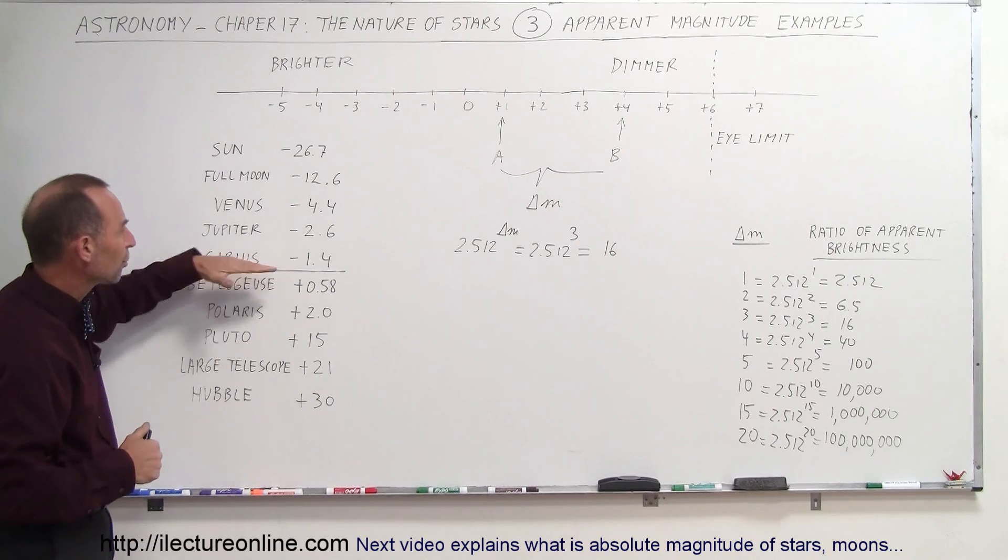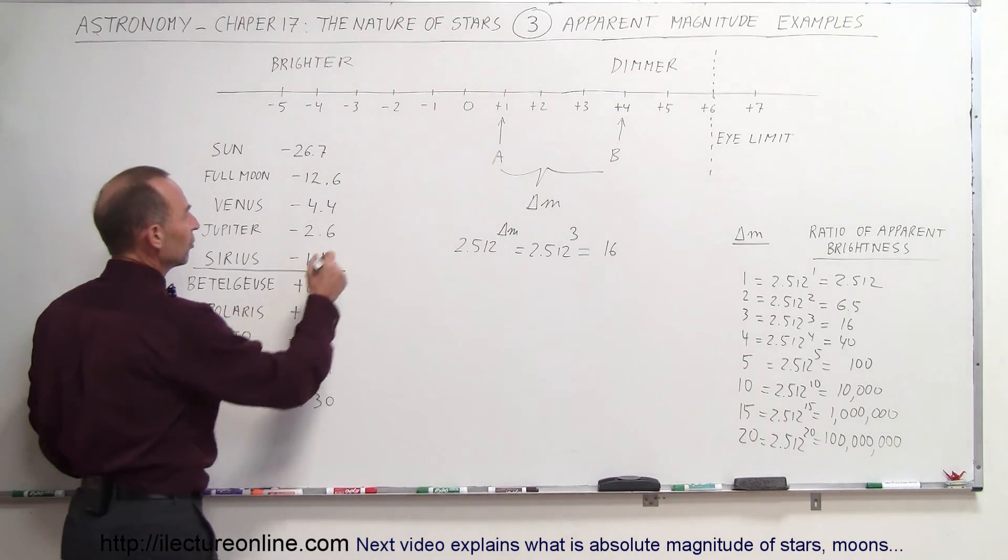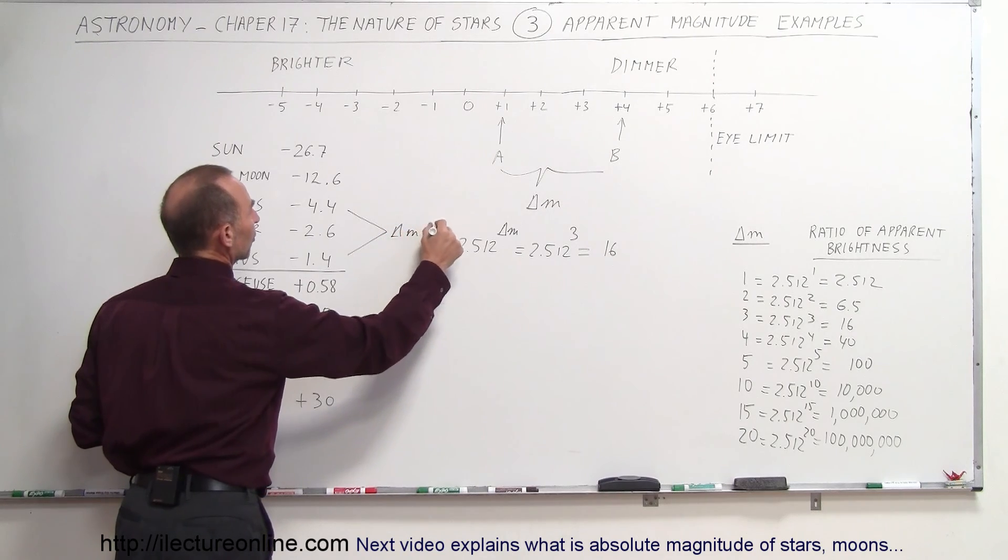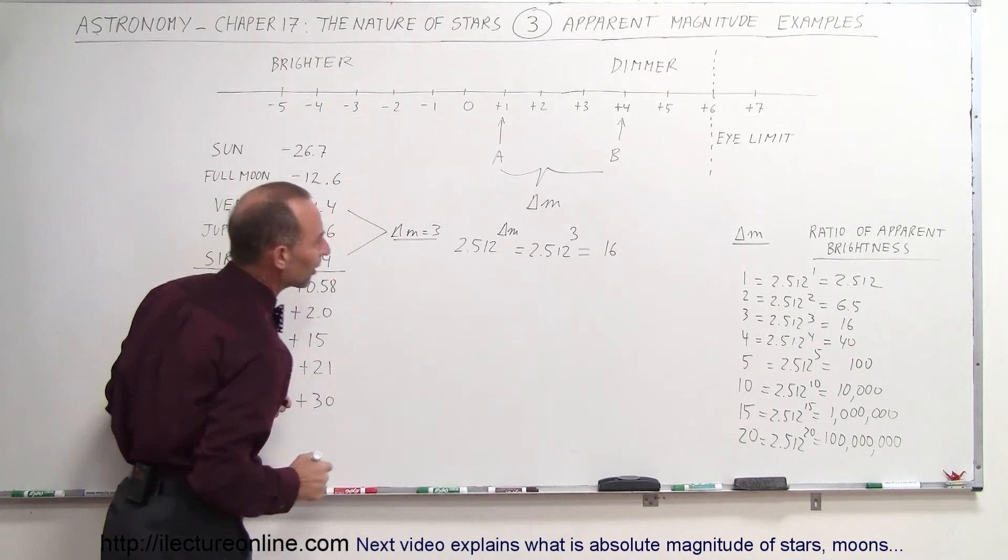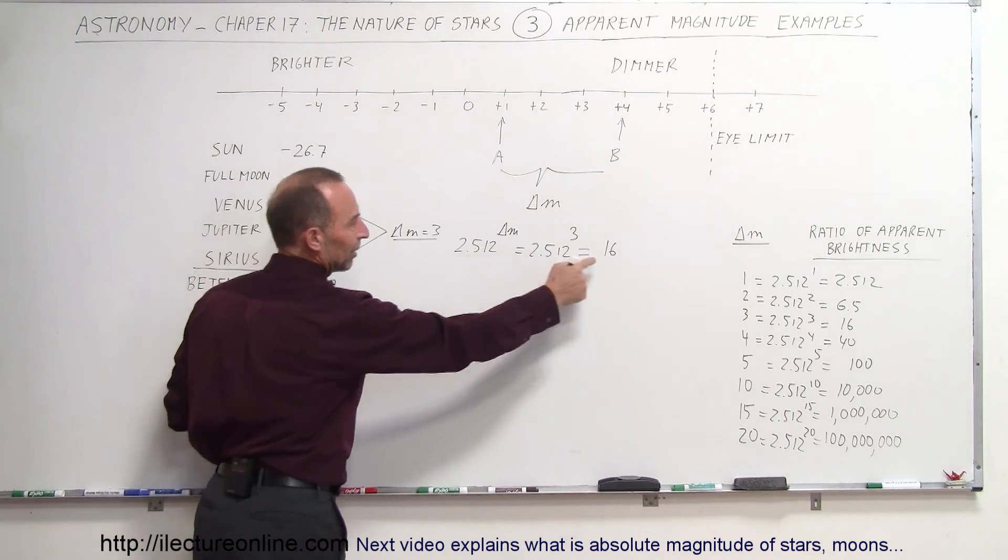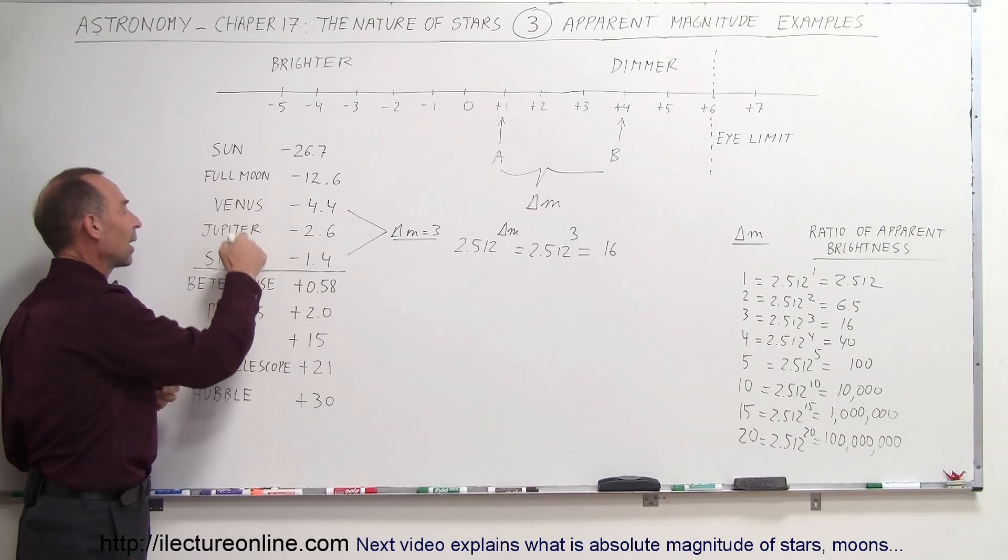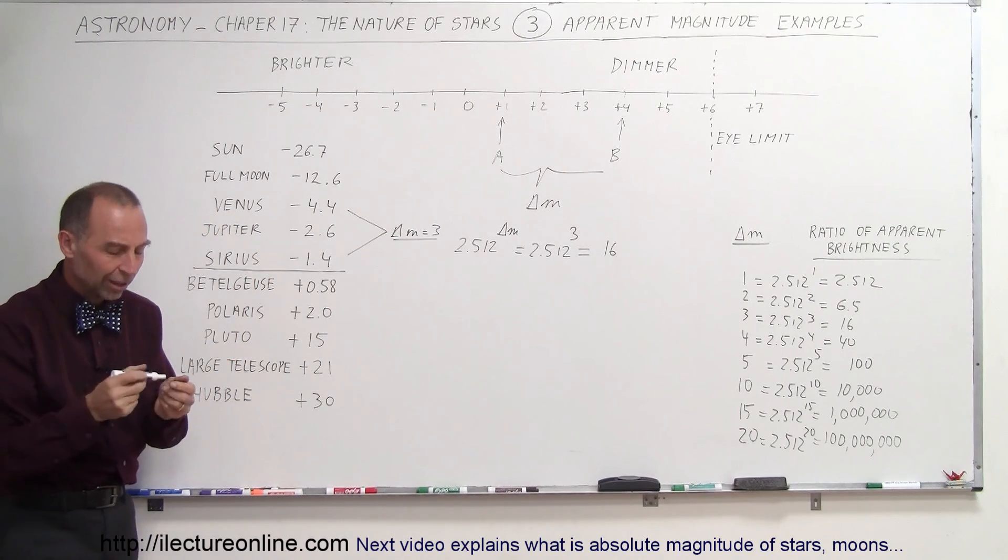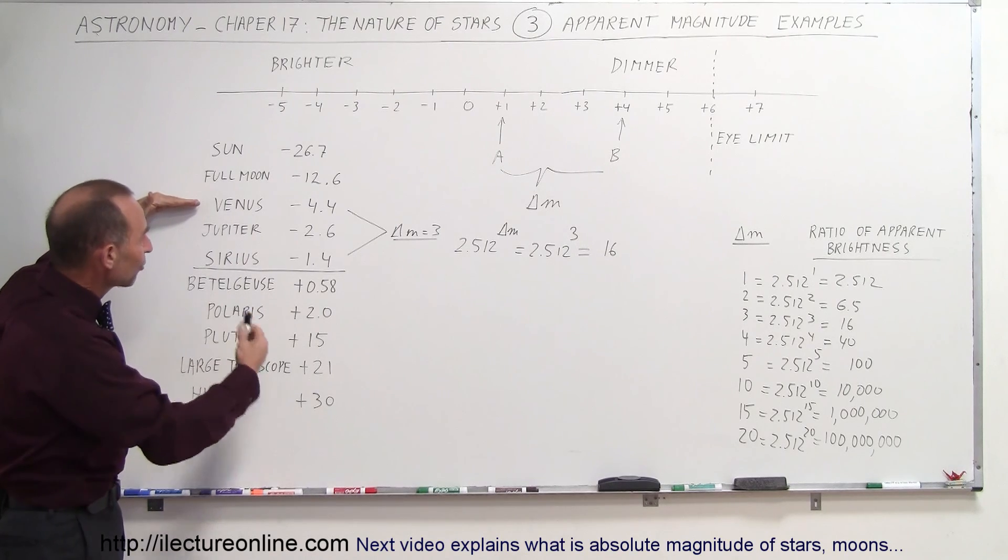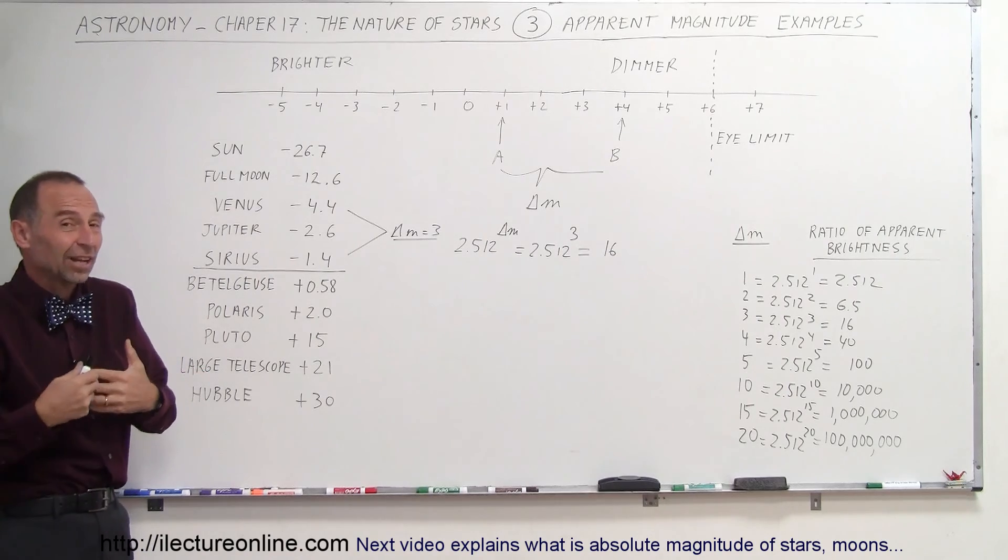How much brighter is Venus compared to Sirius? Notice the difference. If you compare the two, the delta m would be equal to three. That fits right into the example. 2.512 to the third power is 16. Therefore you could say that Venus is 16 times brighter than Sirius. We can see 16 times as much light coming from Venus as we can see from Sirius. Of course Venus doesn't actually put out light itself, it simply reflects the sunlight.